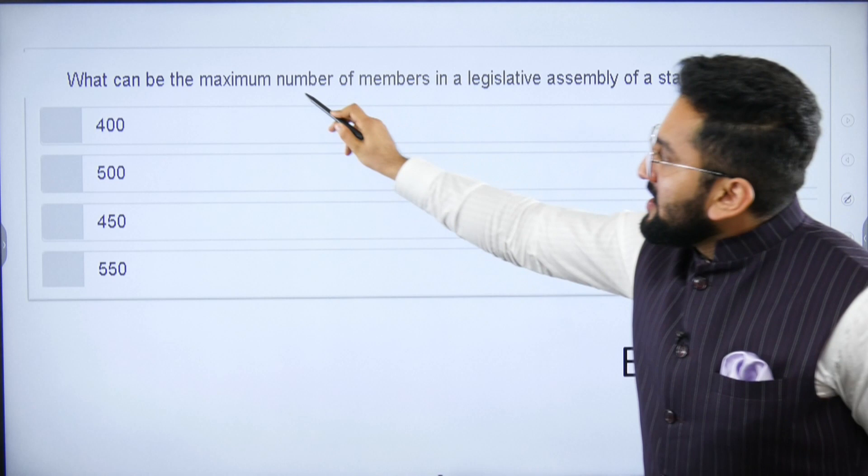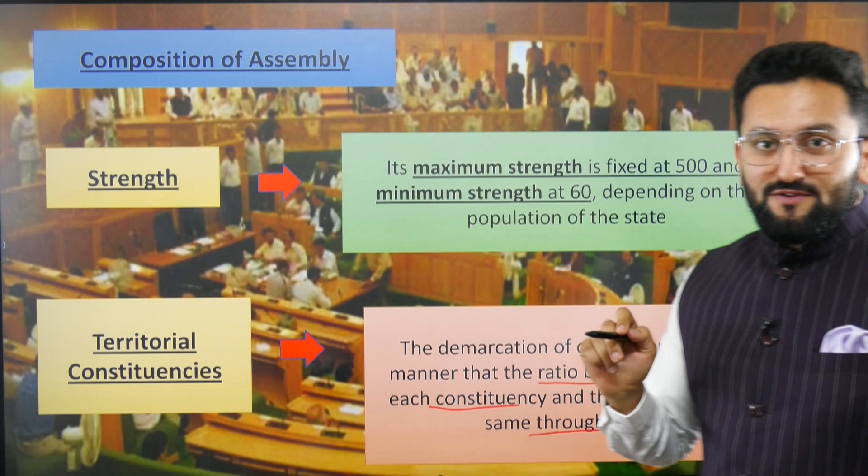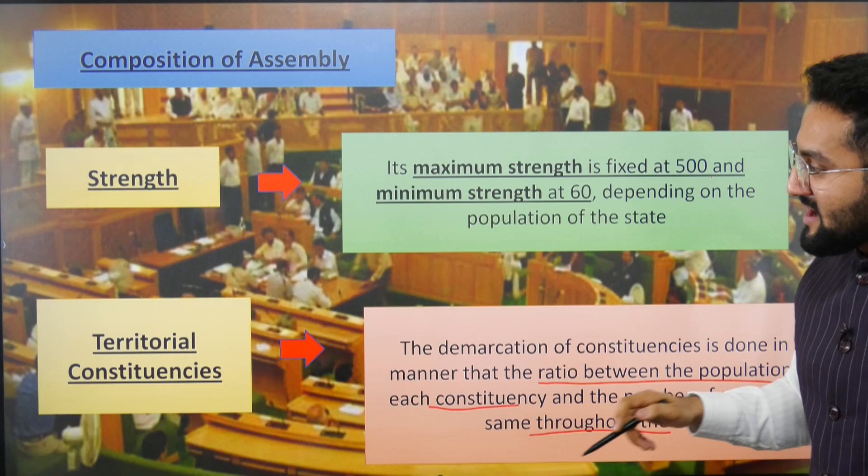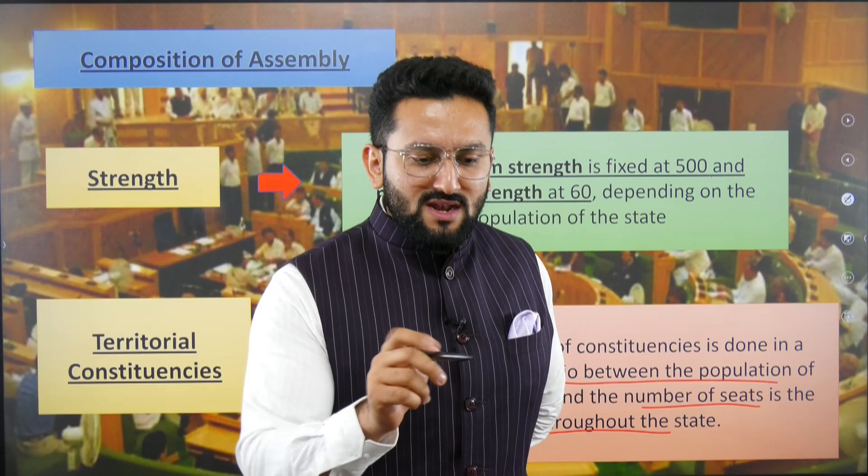Regarding composition: the maximum number of members in a legislative assembly of a state is 500, and the minimum strength is 60, although there can be exceptions like Goa. Constituencies are demarcated so that each constituency represents a proportionate amount of population.